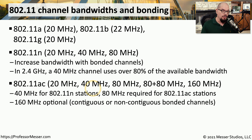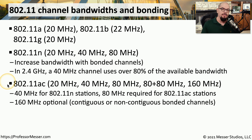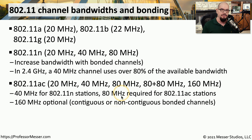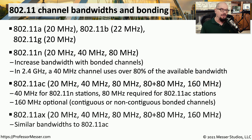802.11ac also uses 20, 40, and 80 megahertz channel bandwidths, but also allows bonding two separate 80 megahertz bandwidths that are not contiguous, or using one single contiguous 160 megahertz bandwidth in the 5 gigahertz range. A native 802.11ac device needs at least 80 megahertz of bandwidth, while increasing to 160 megahertz is optional. 802.11ax uses exactly the same channel bandwidths as 802.11ac: 20, 40, 80 megahertz, two bonded 80 megahertz channels, or a single 160 megahertz channel.